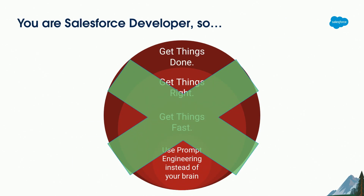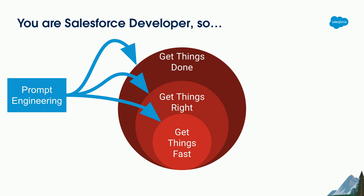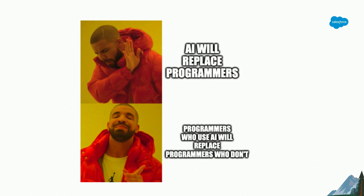I'm not saying that as a Salesforce developer, on top of getting things done, getting things right, and getting things fast, you should now start using prompt engineering everywhere instead of your brain — because that's going to be a serious mistake. What I'm saying is that prompt engineering, when you put some effort into learning about it, can help you get things right, better, and faster. Some people say that AI is going to steal your job very soon. Personally, I'm skeptical about this. But I have a gut feeling that if you can do your job better, faster, and reduce the number of mistakes, at least it's going to positively impact your salary. And between you and me, it's always better to have a slightly higher salary — so I think that should be good enough motivation to start using these skills.